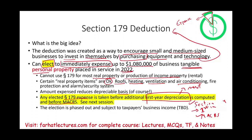Just like everything we've learned in taxation, the election is phased out and subject to limitations — specifically to the taxpayer's business income. Not every penny you spend can be deducted. There are two limitations: how much asset you purchased for that year as personal property, and what your taxable income is.